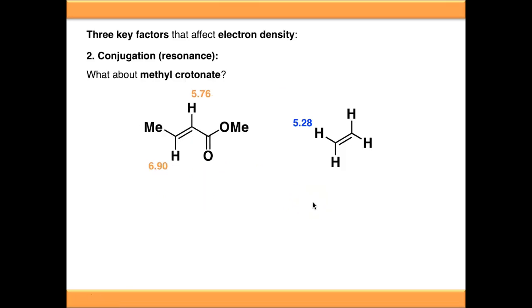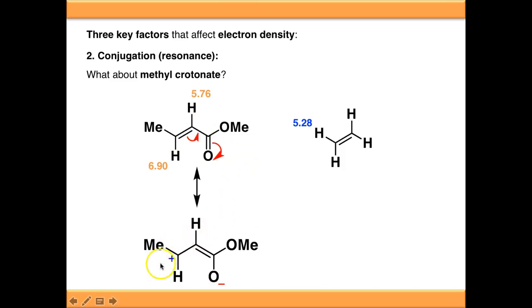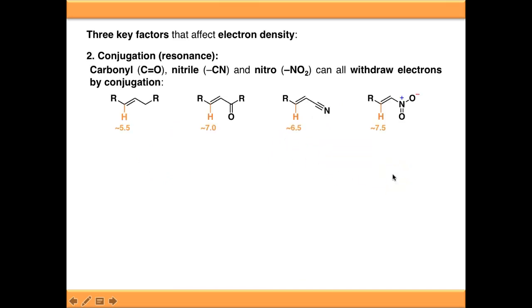Switching to methyl crotonate, we've changed from something which is conjugatively electron donating to something which is conjugatively electron withdrawing. Drawing the resonance form, we're pulling electrons out of the carbon-carbon double bond, which puts a formal positive charge on a carbon, and that has the effect of deshielding the proton directly attached, relative to ethene. Carbonyl, nitrile, and nitro groups can all withdraw electrons using resonance forms, pulling electron density away from these carbon atoms. Relative to a normal alkene, these are all comparatively deshielded.